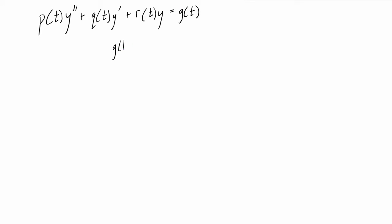When we look at g of t, there are basically three forms this works for. The first one has an exponential in it — something times e to the bt. The particular solution is going to look like an undetermined coefficient times e to the bt with the same exponent. So the form of the particular solution is established, and our goal is just to figure out what that multiplying coefficient is.